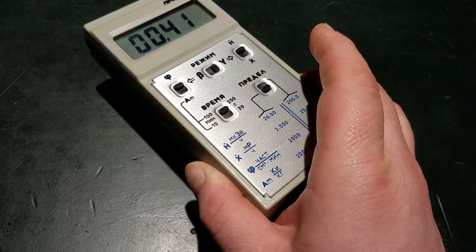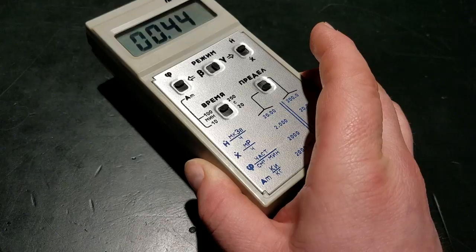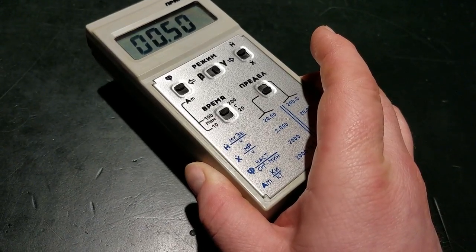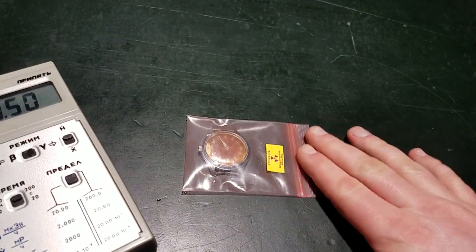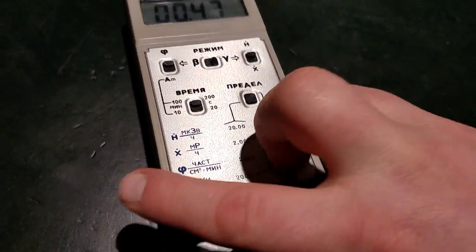It's telling us we have 0.4 and climbing microsieverts per hour, 0.5. You kind of get the idea. So I'm going to move that away from me and we'll start over.